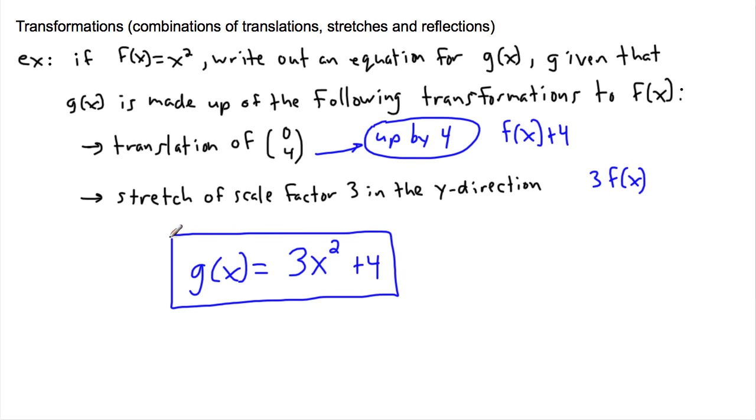g(x) is just 3x² plus four. If I want to draw it I could just take my x squared and raise it up by four and take everything and then stretch it by three as far as its distance from the x-axis, but they just wanted the equation.